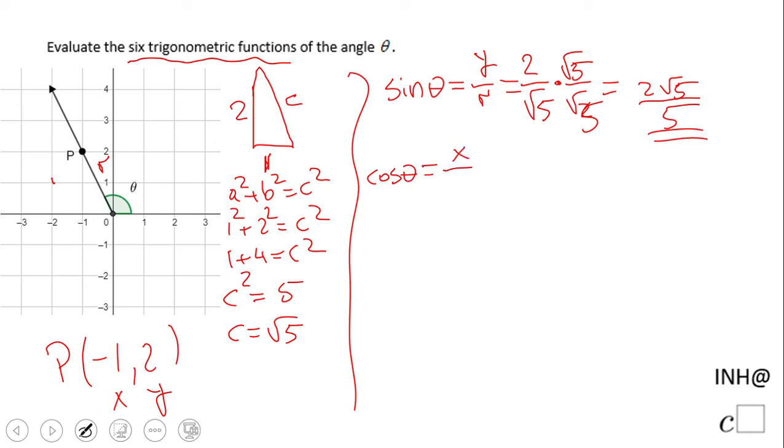x over r, which is gonna be in our case -1 over √5, which if we rationalize we get -√5 over 5.